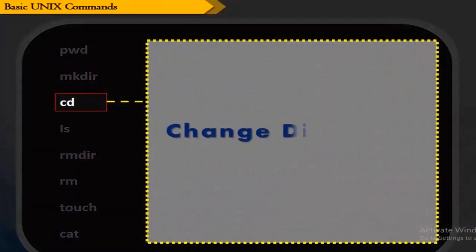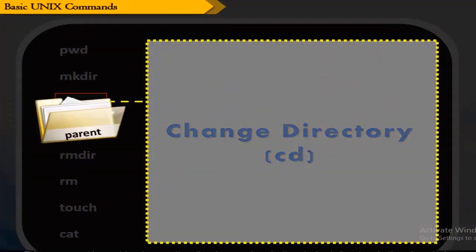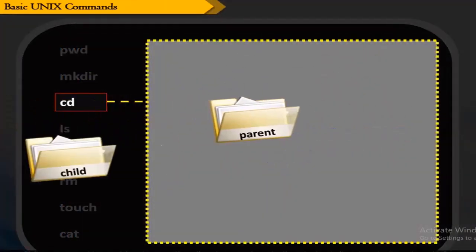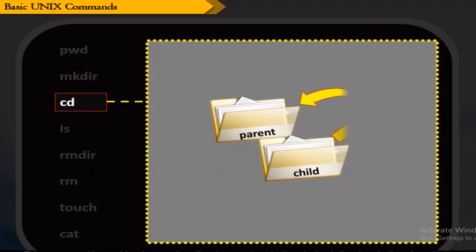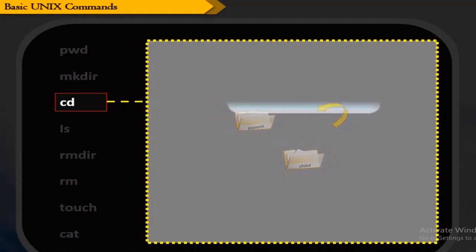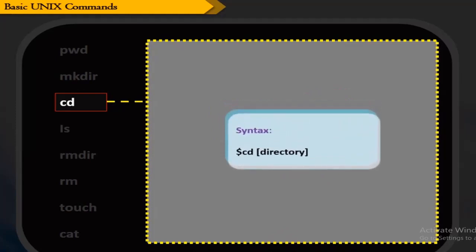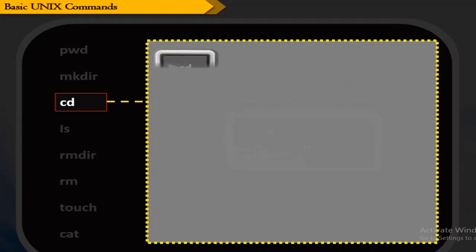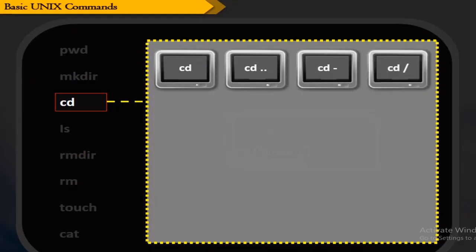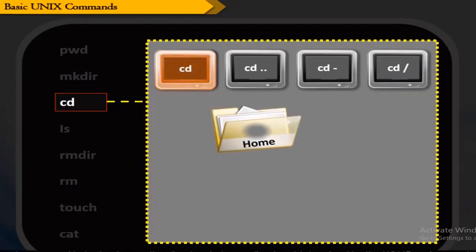cd stands for change directory. This command is used to change the directory and go to the desired directory in the given UNIX environment. The syntax is shown here. The cd command helps to change the directory to the home directory, determined by the HOME environment variable.